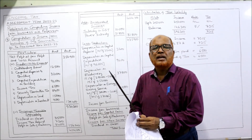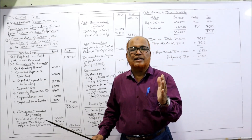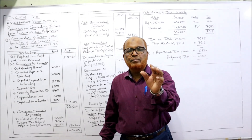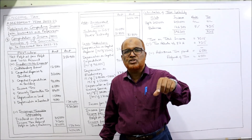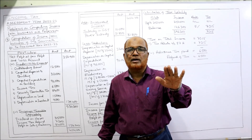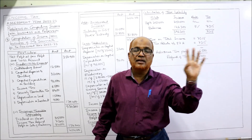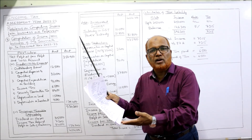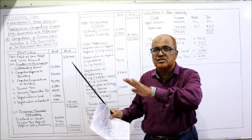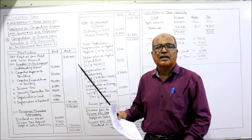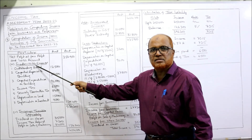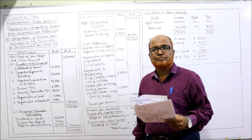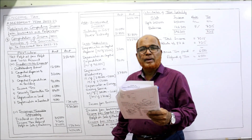Now one by one we will see which items on the debit side are inadmissible. Inadmissible means those expenses which are not allowed as deduction by the Income Tax Act — already debited to the profit and loss account but the Income Tax Act says they are not allowed. That is called inadmissible expenses. Now on the debit side: payment to staff — salaries allowed, payment of allowances allowed.